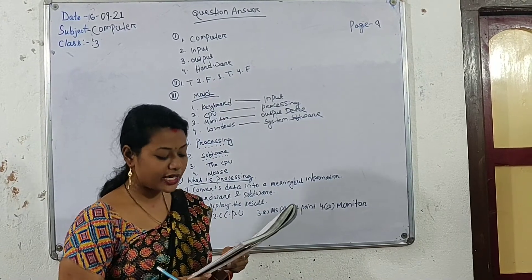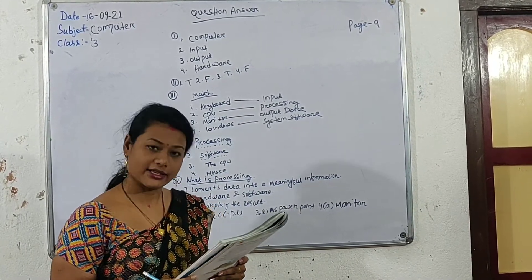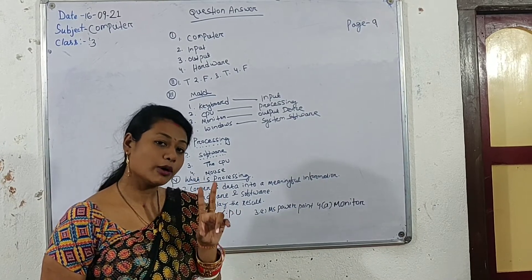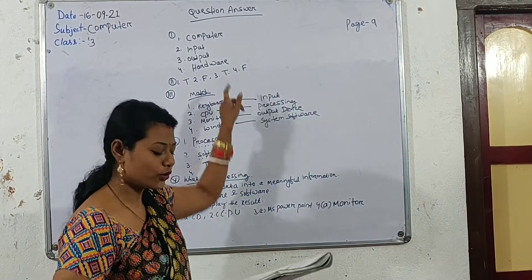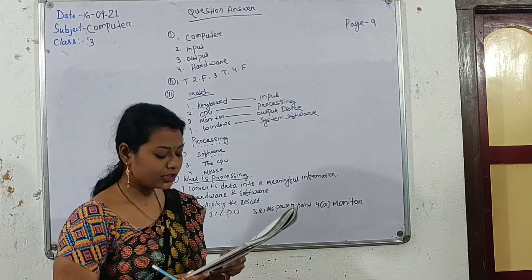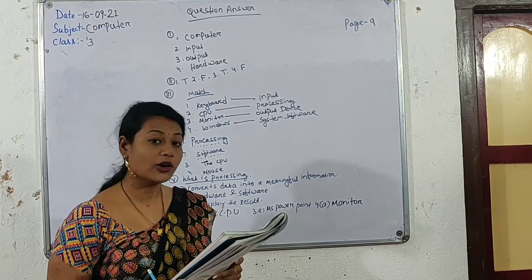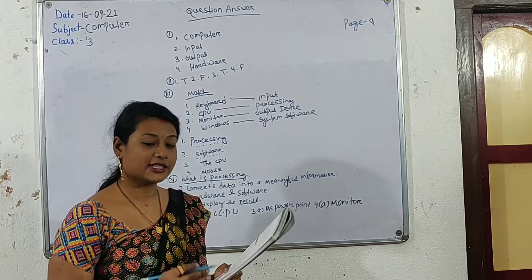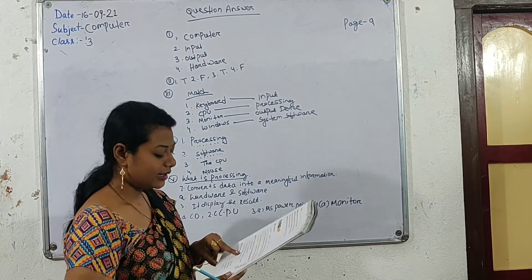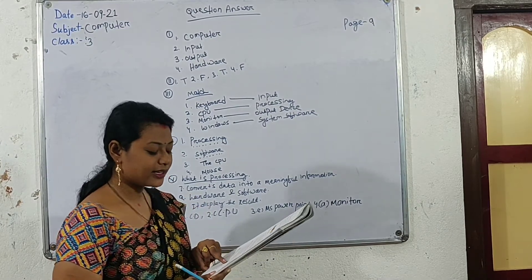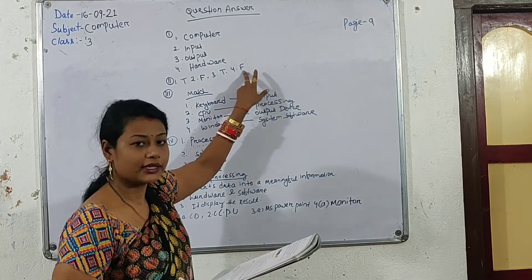Third number: Hardware and software are two parts of a computer — yes, hardware and software are two components or two parts of a computer, it is true. Fourth number: Output devices do not display the result — no, because output devices do display the result, so the statement that they do not display the result is false.